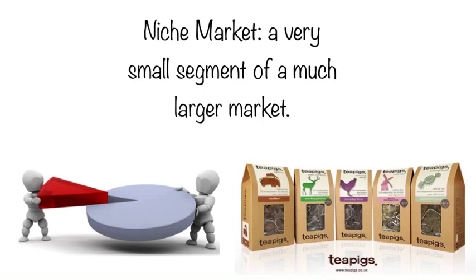For example, improving digestion and improving relaxation. Teapigs has the typical characteristics of a niche market in terms of price and availability. Compare purchasing 50 bags of Teapigs for £24.99, available only through specialist retailers such as Ocado or direct online, to Tetley's, which you can purchase for roughly £1.75 at most supermarkets.